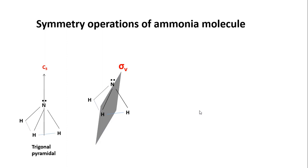During reflection, atoms present in the plane will not get shifted. The atom present to the left will go to the right, and the atom on the right will go to the left.